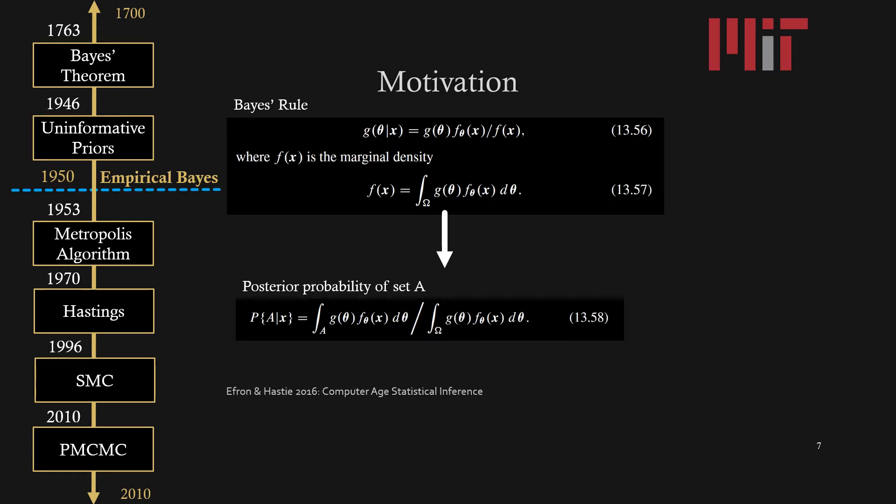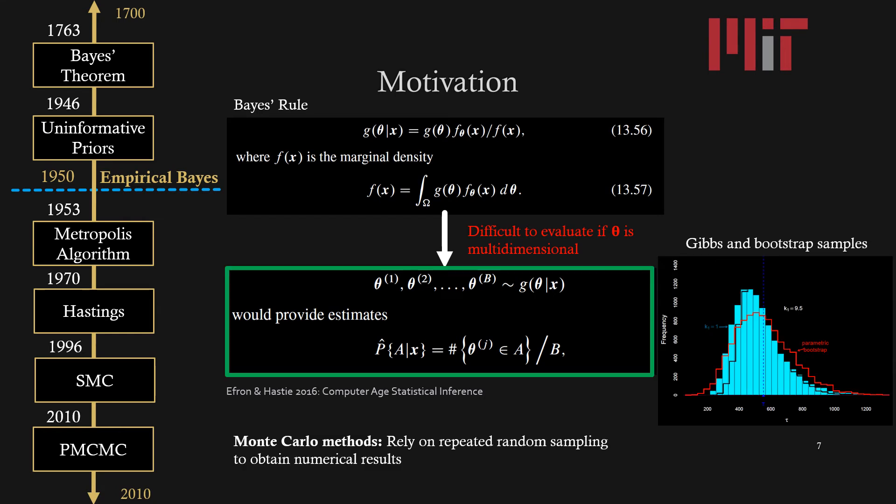Starting in the 1950s, when applying Bayes rule, a lot of statisticians started to realize when they're calculating the posterior probability, they were not able to compute the integrals in closed form. For example, when theta is multi-dimensional, it is difficult or potentially intractable to evaluate this conditional probability. So instead their solution was to sample from the distribution of g of theta given x. By continuously sampling you're able to approximate the distribution, and using that approximation you can estimate what that posterior would be without having to compute those closed form integrals. On the right hand side you can see the output of Gibbs bootstrap samples.